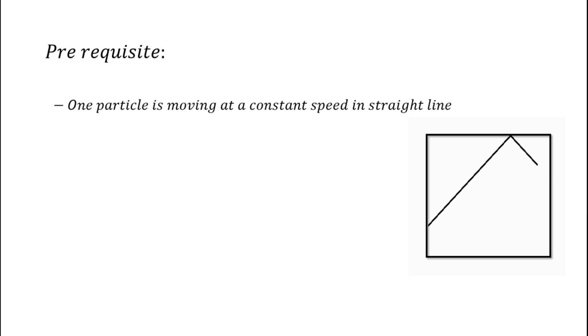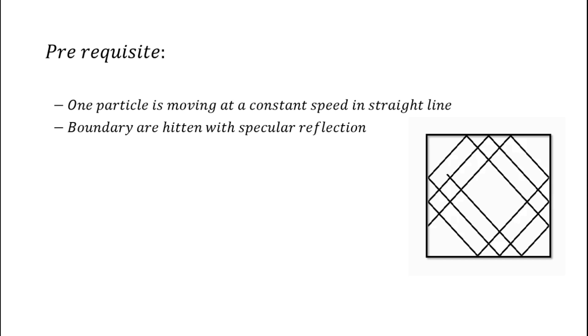Before starting the resolution, let me show you the rules that a dynamical billiard follows. First, there is one particle moving at a constant speed and in a straight line. Frequently, the particle hits the boundary with a specular reflection and keeps the same speed, so the system doesn't lose energy.